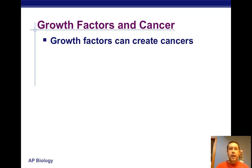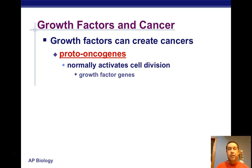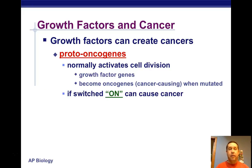Growth factors can create cancer when they are out of control. There's a group of genes called proto-oncogenes that normally activate cell division. They are genes that produce growth factors, causing cells to divide. They become oncogenes, or cancer-causing genes, when they have a mutation where they're basically turned on all the time — if they're switched on, they cause cancer.